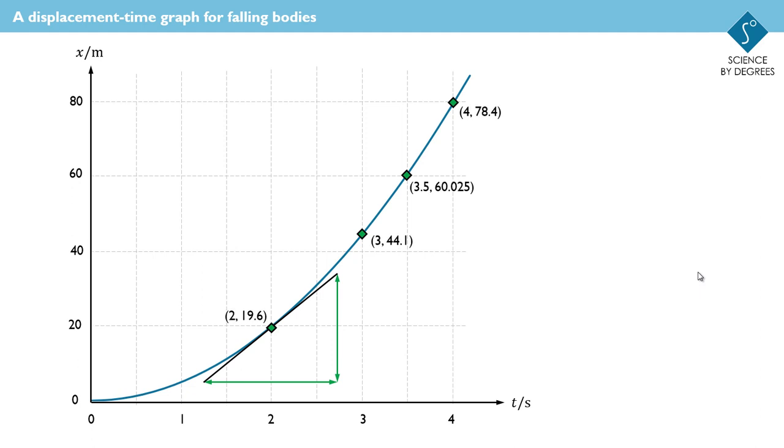These numbers are the coordinates on the graph. So after time 2 seconds it's travelled 19.6 metres, after time 4 seconds it's travelled 78.4 and so forth, and let's concentrate on time 2, because that's where we want to know our answer.